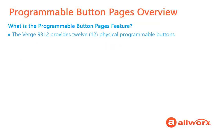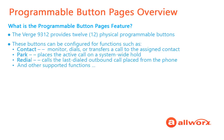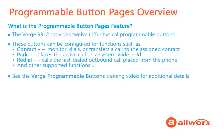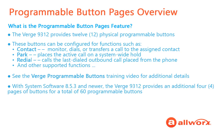The Verge 9312 phone has 12 physical programmable buttons, which can be configured to specific functions such as contact, park, and redial. This is only a partial list of supported functions. Please see the Verge Programmable Buttons training video for a complete list of supported functions and further details on how to configure a programmable button. With system software 853 and newer, the Verge 9312 phone has an additional four pages of buttons, for a total of 60 programmable buttons.